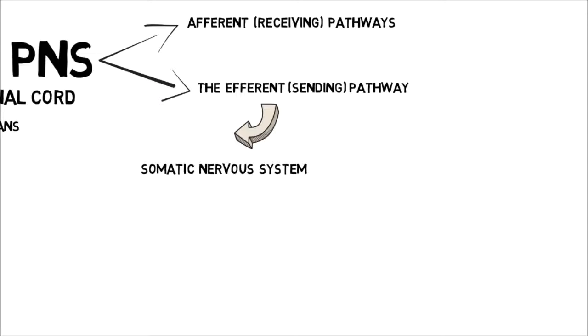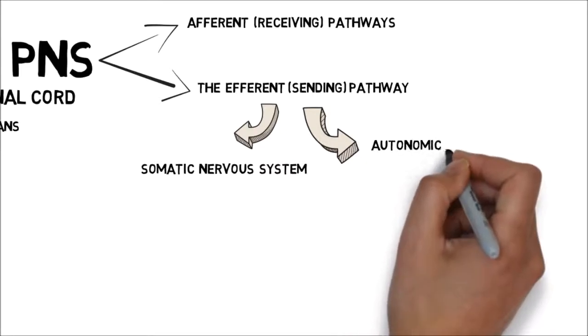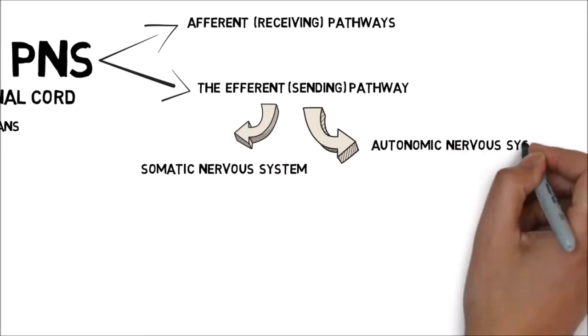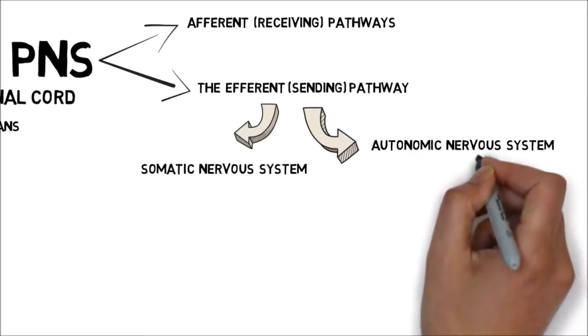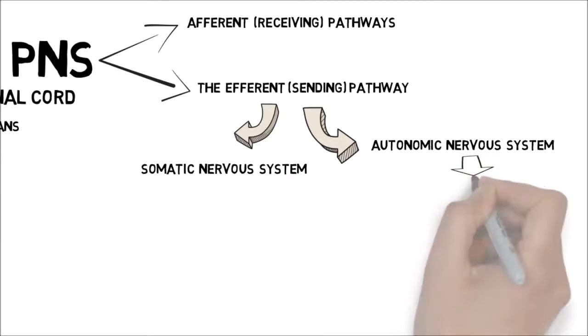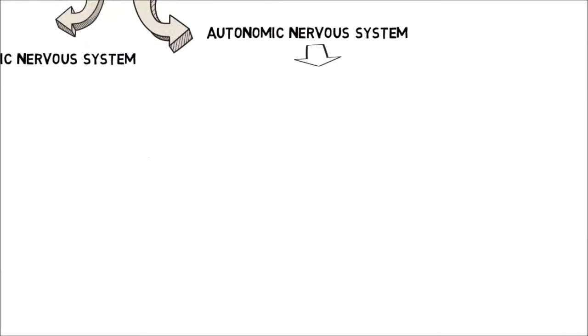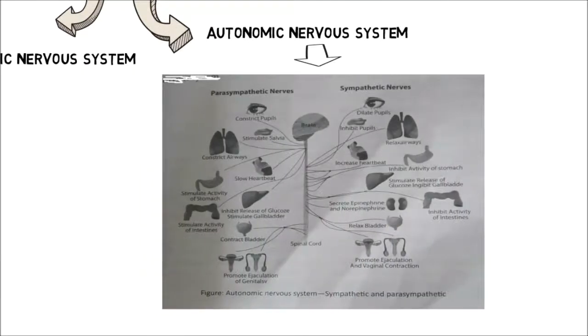The second one, that is the autonomic nervous system. This integrates the involuntary muscles and the glands. It consists of a pair of chains of ganglia and nerves on either side of the backbone. This system is essentially a motor system which regulates the involuntary action of the internal organs. It consists of two parts: sympathetic nervous system and parasympathetic nervous system.